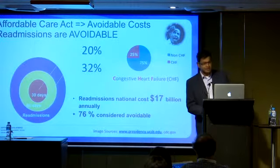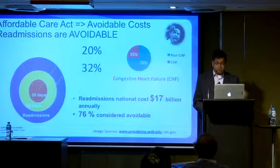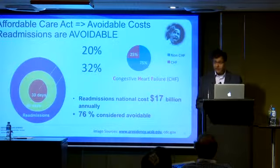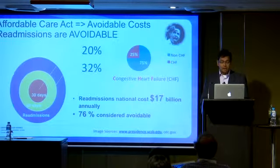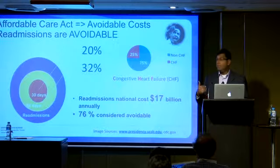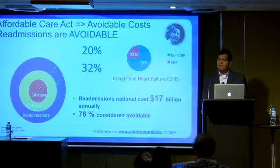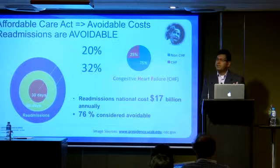Let's start. Eight years ago Obama was elected, the Affordable Care Act came in, and there is a claim that 76% of all readmissions are considered avoidable. In fact, the claim is that these readmissions are costing us 17 billion dollars annually as taxpayers, and one in three patients gets readmitted to the hospital within a month if they are facing a chronic condition.